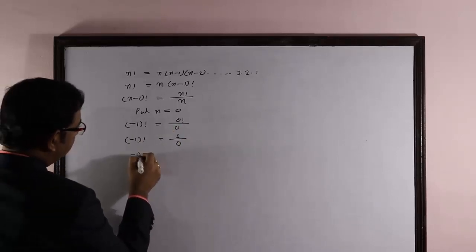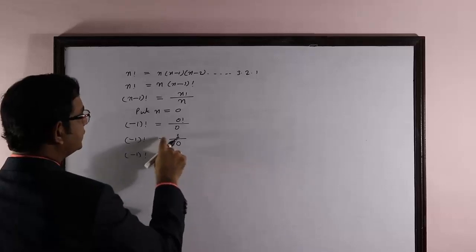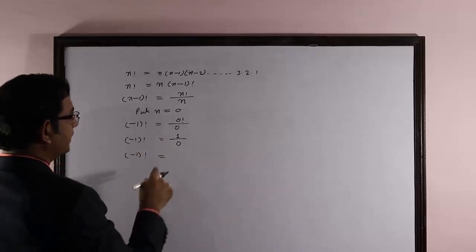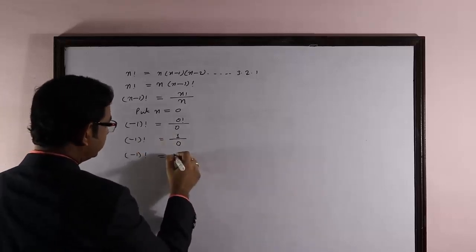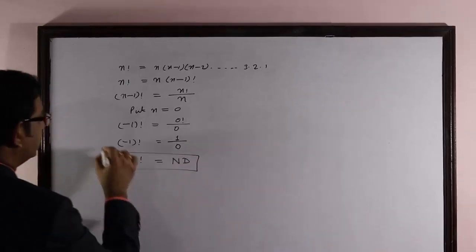Ultimately, negative 1 factorial is, you know very well, division by 0 is not allowed in mathematics. So 1 by 0 is not defined. Ultimately, negative 1 factorial is not defined.